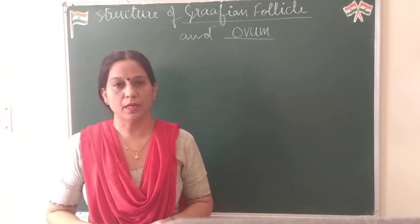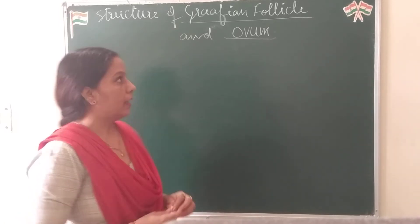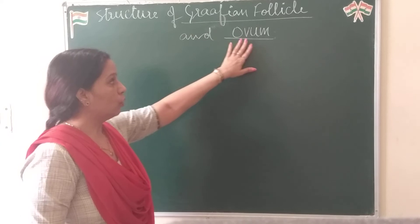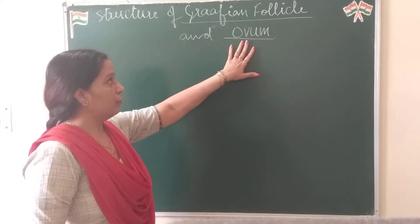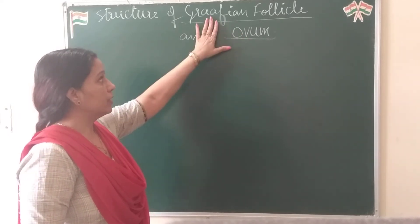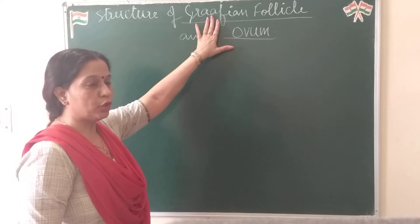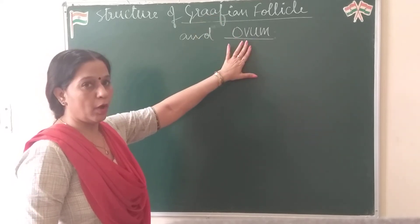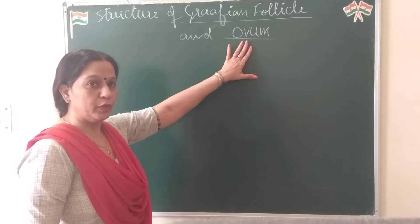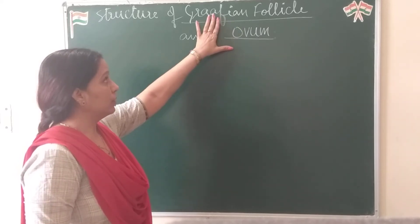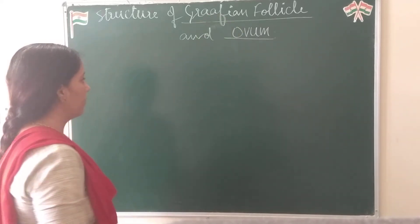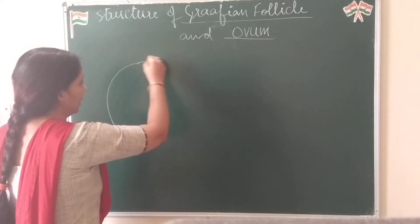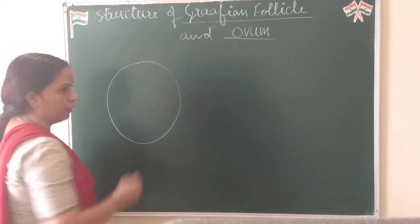Hello students, today we will see the structure of Graafian follicle and ovum. We have to find out what are the differences between this mature follicle and how the ovum is different from the stage of nucleus of the oocyte present in the Graafian follicle. First of all, we will draw the Graafian follicle. Graafian follicle is the mature form of follicle.